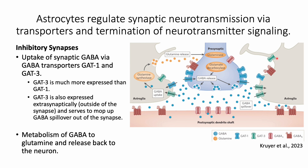Similar to excitatory synapses, astrocytes break down GABA into glutamine and release this building block back to the neuron.